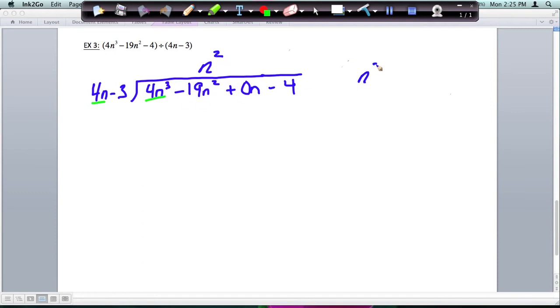Let's do that multiplication over here, and I get 4n cubed minus 3n squared. So I'm going to write that here, 4n cubed minus 3n squared. And this is where you need to be careful with your signs.